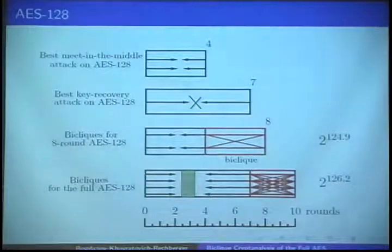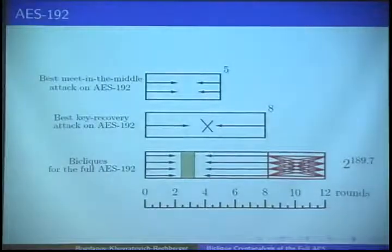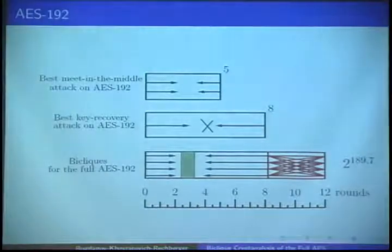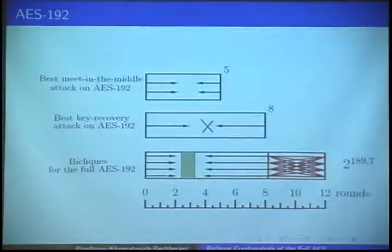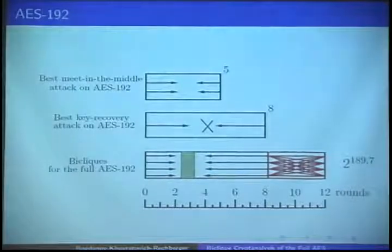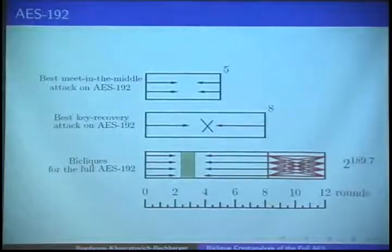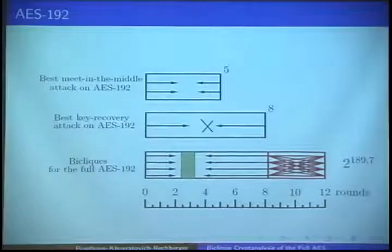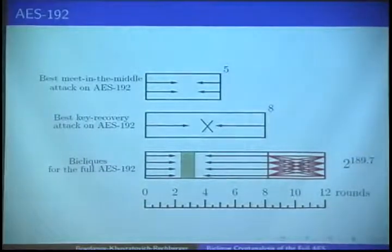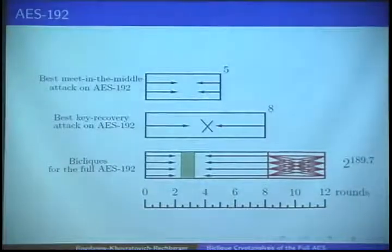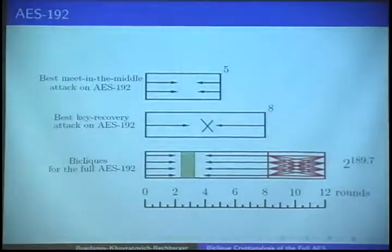Our attack can be well applied on all versions of the cipher, including of course 192. The best meet-in-the-middle covered before as few as five rounds. The best key recovery attacks covered eight rounds. And now we make a four-round step ahead with even larger advantage than in the 128 version and are able to recover a secret key of full 12-round AES-192 faster than exhaustive search.